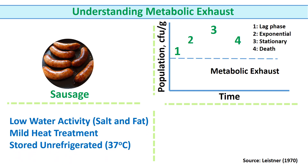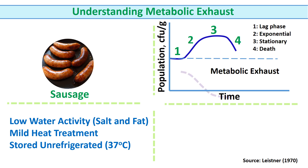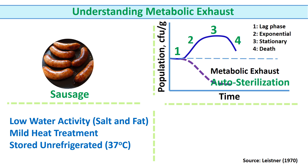We could explain metabolic exhaust with an example. Liver sausage was adjusted to low water activity by adding salt and fat. It was inoculated with Clostridium spores. The sausage was mildly heated to 95°C at its core temperature and stored at 37°C. During storage, it was observed that bacteria that survived heat treatment vanished during storage. This phenomenon of declining bacteria instead of growth is termed autosterilization.